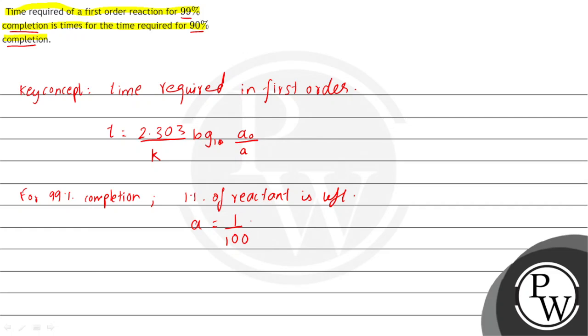So let for 99% completion, t₁ time is equal to 2.303 by k log₁₀ a₀ upon a. Value here, we will add this. So a₀ into 100, so a₀ a₀ cancel.